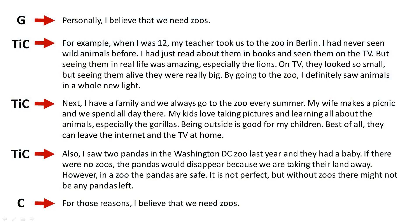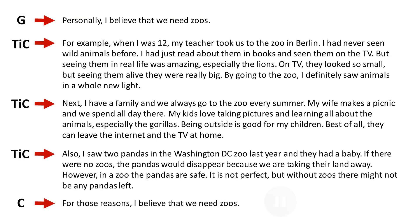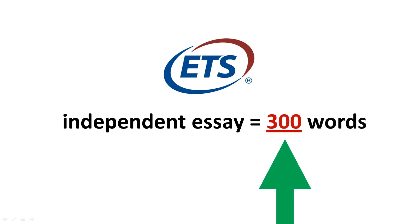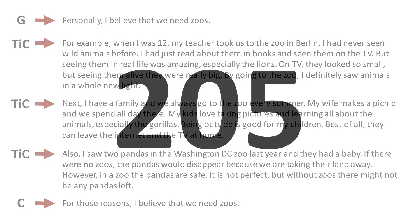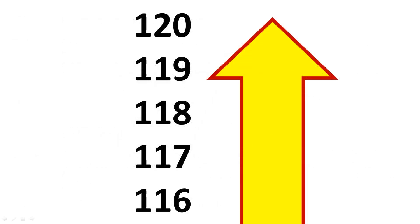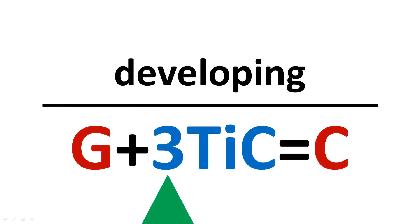Note the three-part structure of this basic independent essay using G3TICC. ETS says that an independent essay should be about 300 words. This basic independent essay is 205 words. For increased word count and a higher score, I need to develop this basic independent essay into an advanced independent essay.